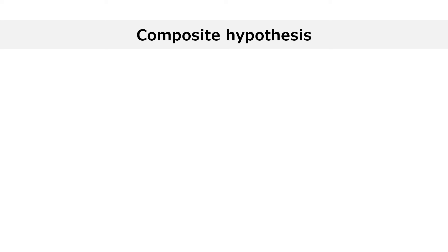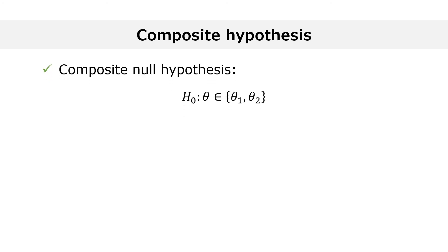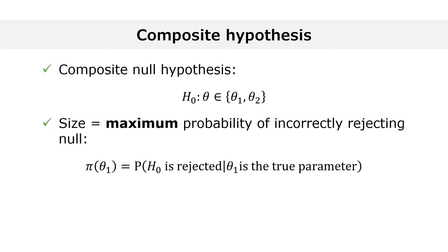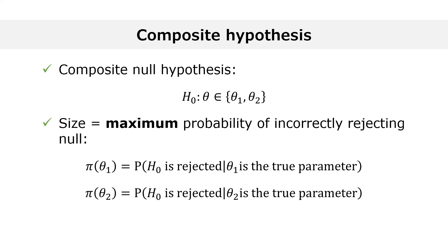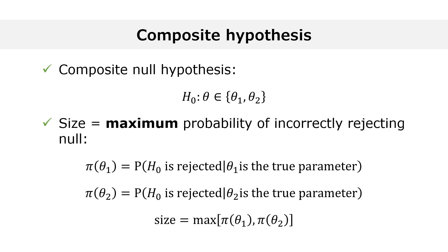In a composite hypothesis, we assume that the true parameter belongs to a set comprising many different values. In the example on this slide, the composite null hypothesis is that the true parameter is equal to theta 1 or theta 2. We can use the power function to compute the probability of incorrectly rejecting the hypothesis for theta 1, and also for theta 2. Thus, we have two probabilities, pi of theta 1 and pi of theta 2, and the size of the test is equal to the largest of these two probabilities.